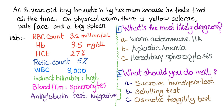Let's work through a clinical vignette. An 8-year-old boy is brought in because he feels tired all the time, suggesting anemia. On physical exam: yellow sclera suggesting jaundice, pale face suggesting anemia, and a big spleen indicating splenomegaly, which may mean hemolytic anemia. Labs show low red blood cell count, low hemoglobin, and low hematocrit — confirming anemia.